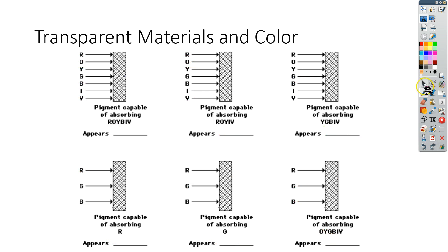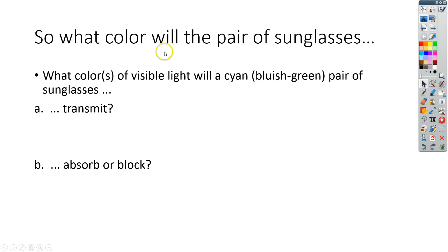And that's essentially how we do the transparent materials in color and looking at what's going on. So they want to know, you've got a pair of sunglasses, and they want to know what colors of visible light will a cyan or blue-green pair of sunglasses transmit. These sunglasses are transparent, so the colors that are not absorbed are transmitted. So cyan sunglasses transmit both green and blue.